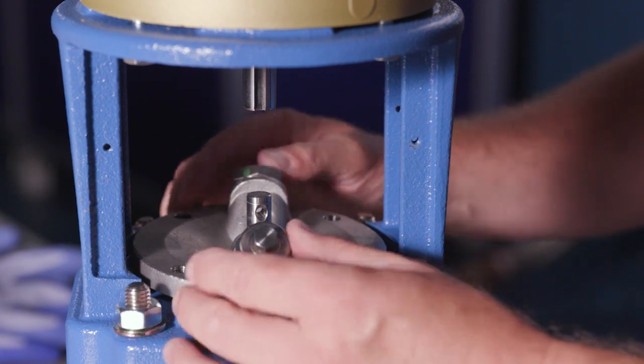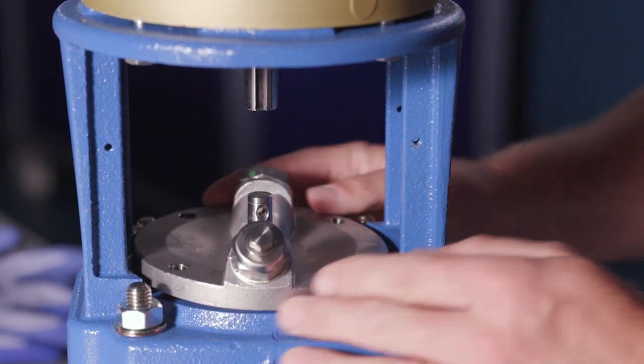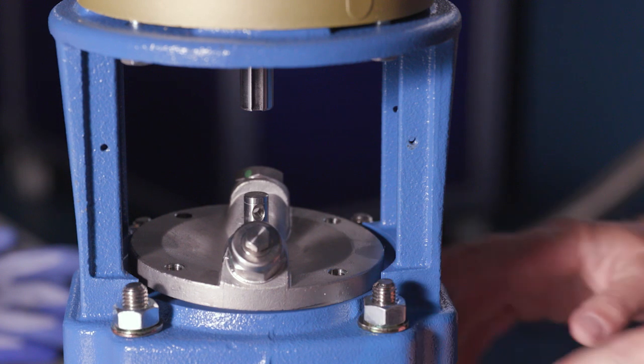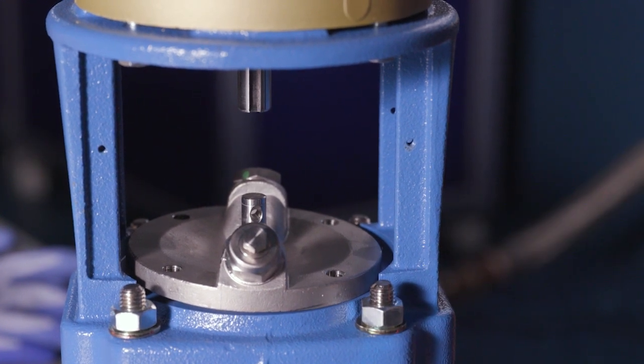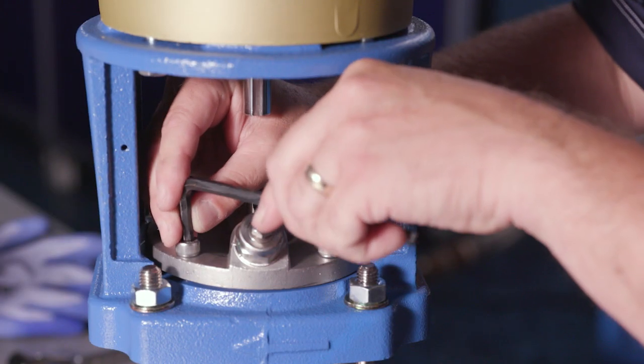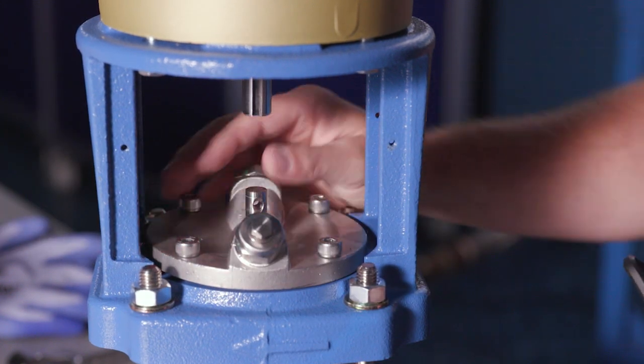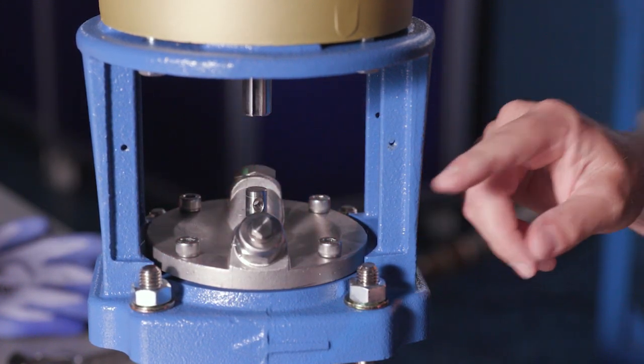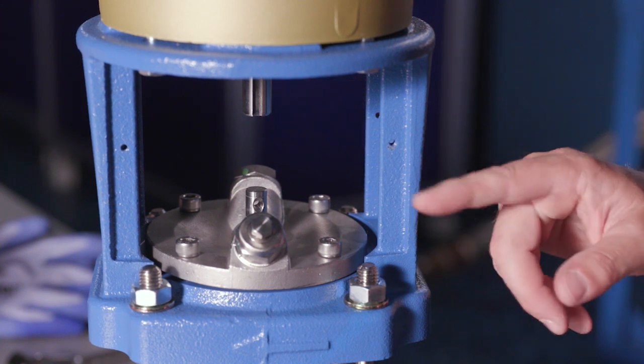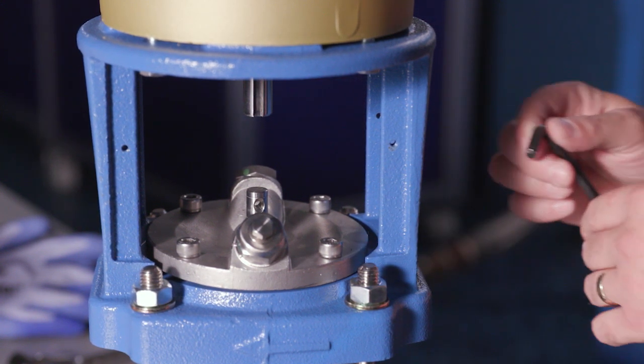Now all we have to do is take the four bolts, tighten down evenly, and we'll be done with that portion. We want to tighten these evenly, do the cross pattern, follow the torque spec in the catalog.